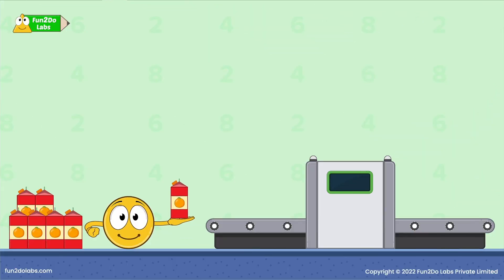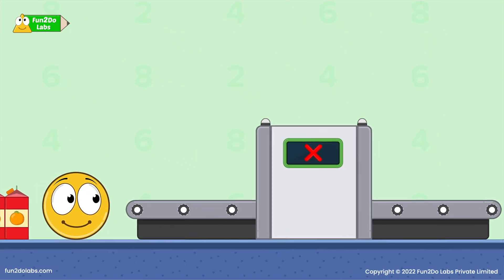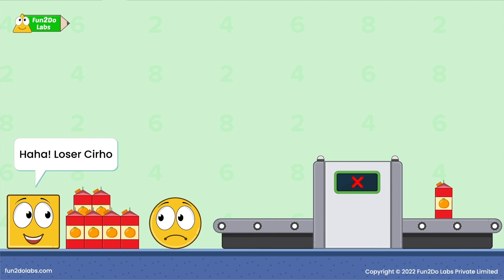Siro goes first. He takes just one juice packet and puts it in Mr. Perfect Pear. Mr. Perfect Pear does not pack the juice packet. Siro is disappointed. Ha ha! Loser Siro!